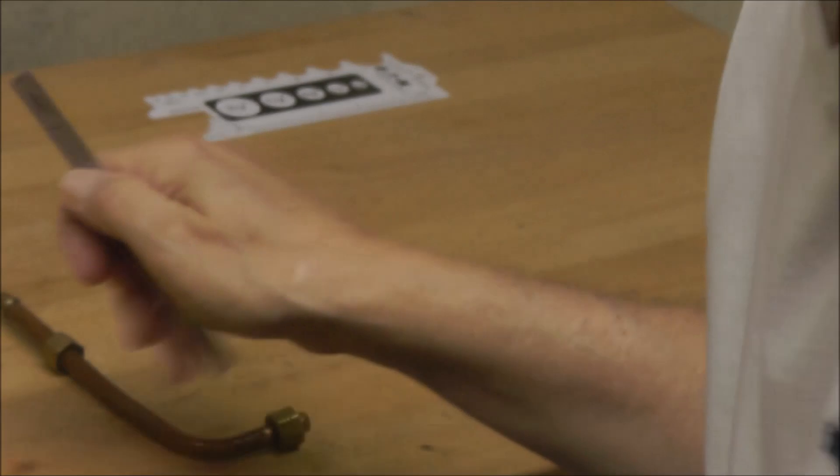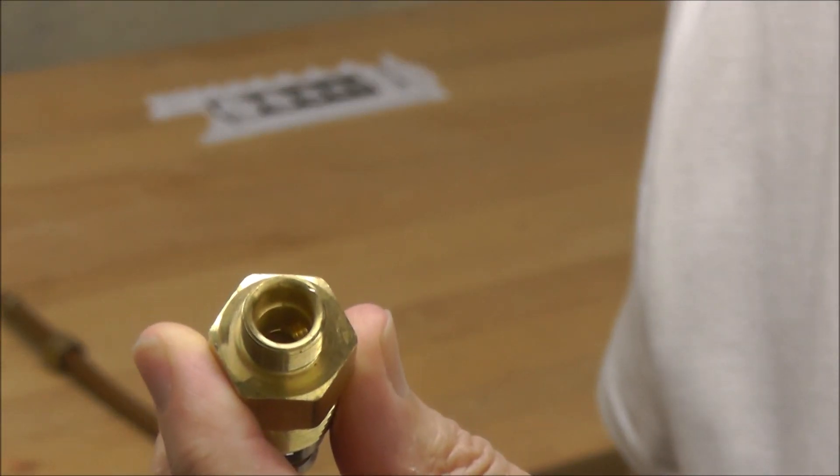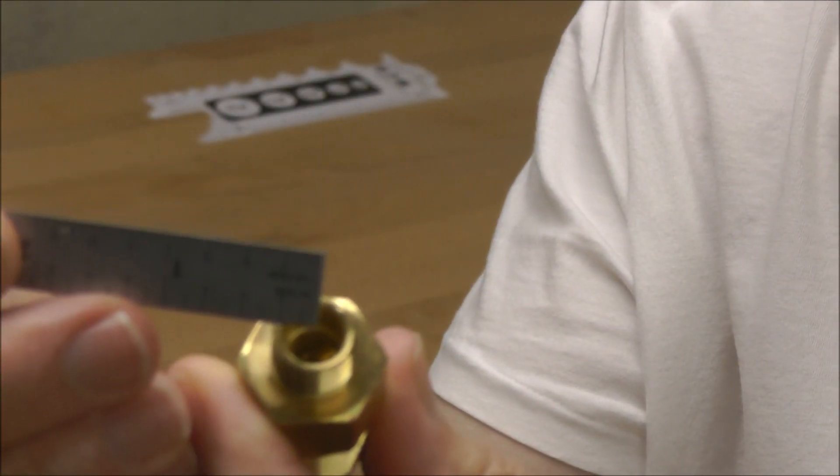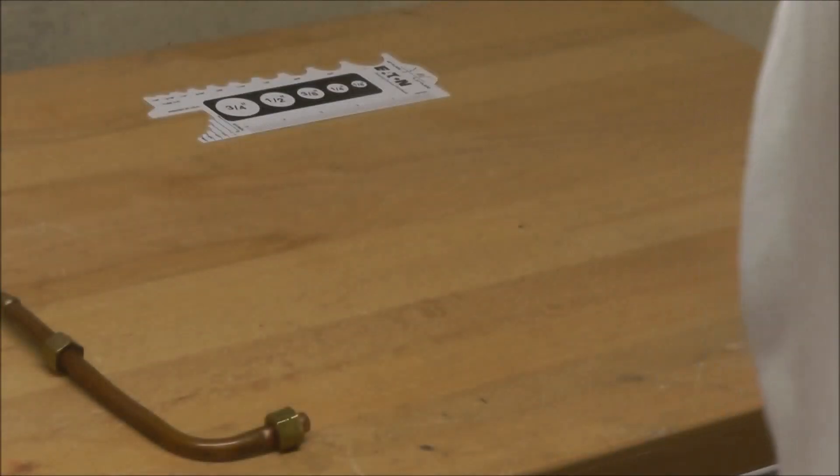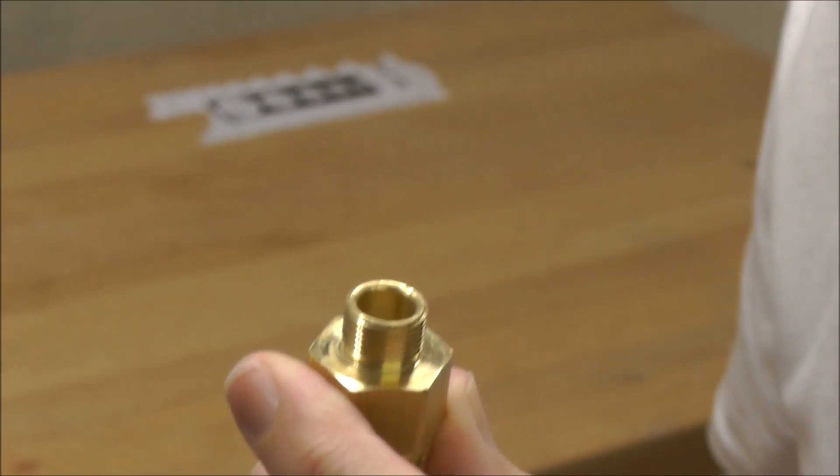If you look at the matching check valve, for instance right here, and you put a rule across the inside where that tube would go, it measures 3 eighths of an inch as well. So this is going to be 3 eighths inch compression.